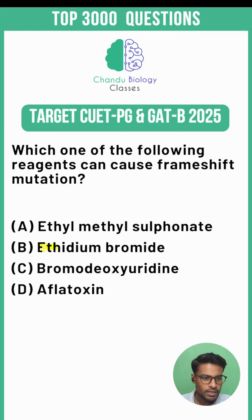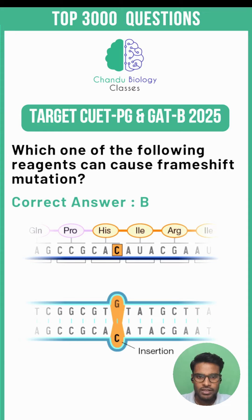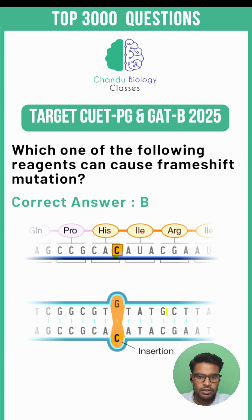The correct answer would be option B. Ethidium bromide is an intercalating agent that inserts itself between the base pairs of the DNA. This insertion can interrupt the normal reading frame of the genetic code during DNA replication or transcription.